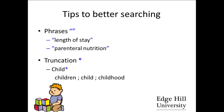The other useful tip is to use truncation. You can use this when you're looking to search on aspects of the same thing that may be singular, plural, or variations. For example, 'children' can often be truncated to 'child' with an asterisk. The asterisk then allows you to pick up different variants of that same term — so it will pick up children, child, and childhood.